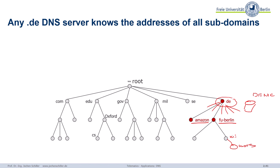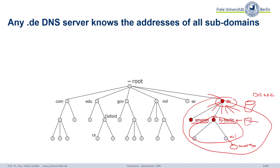This answers the question of how you organize the domains and subdomains, because at the university level we also have a primary master knowing everything about Math Informatics, Biology, Chemistry, Pharmacy, Physics, and so on — all the subdomains there. So it's a hierarchical system — up to 127 levels. This still doesn't answer the question: what if someone says there's a computer oslo.mathinformatics.fuberlin.de, and I want to contact it — whom do I ask? I don't even know.